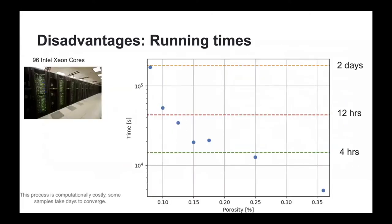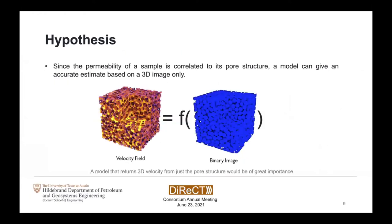After convergence, the simulation provides us with 3D tensors of the velocity components and the pressure of the system. These are a fantastic method, specifically for complicated geometries where a finite element method would fail due to meshing. The problem with this method is that it requires a huge amount of computational resources. As shown in this plot, increasingly tight samples can take up to two days running on a hundred cores of our supercomputer, making it hard to deploy as an industrial workflow.